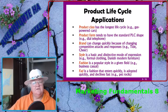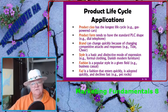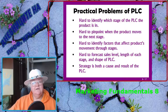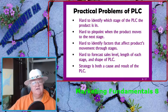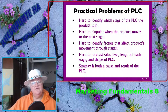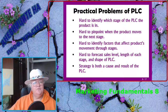Style is a basic and distinctive mode of expression, like formal clothing or Danish modern furniture. Fashion is a popular style in a given field, like business casual. A fad is a fashion that enters quickly, is adopted quickly, and declines fast, like pet rocks. There are practical problems with the product life cycle: it is hard to identify which stage the product is in, hard to pinpoint when the product moves to the next stage, hard to identify factors that affect the product's movement through stages, and hard to forecast sales level, length of each stage, and the shape of the product life cycle.